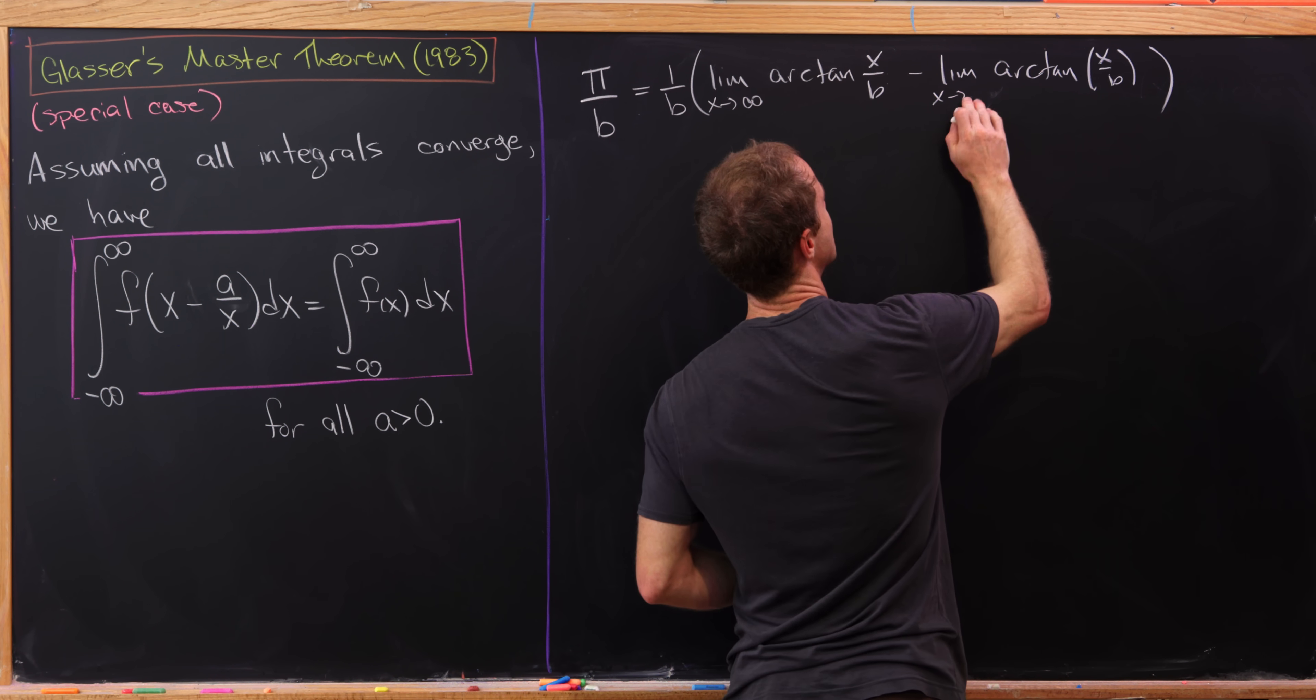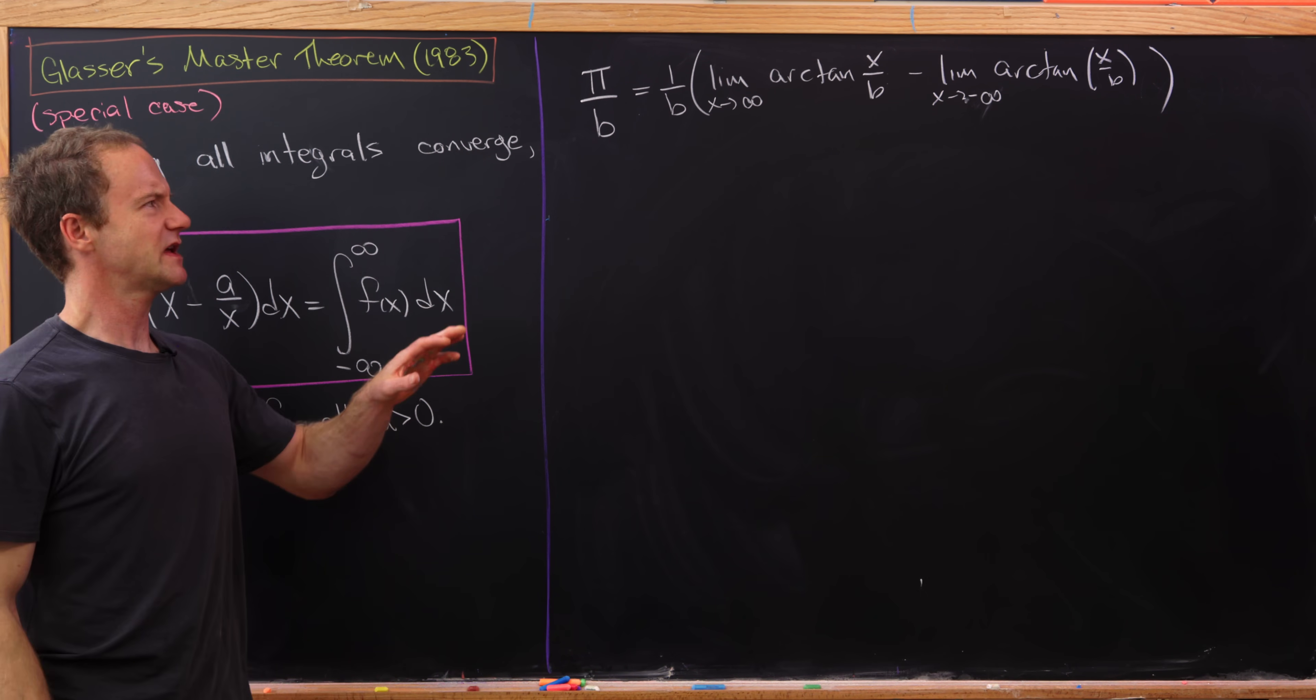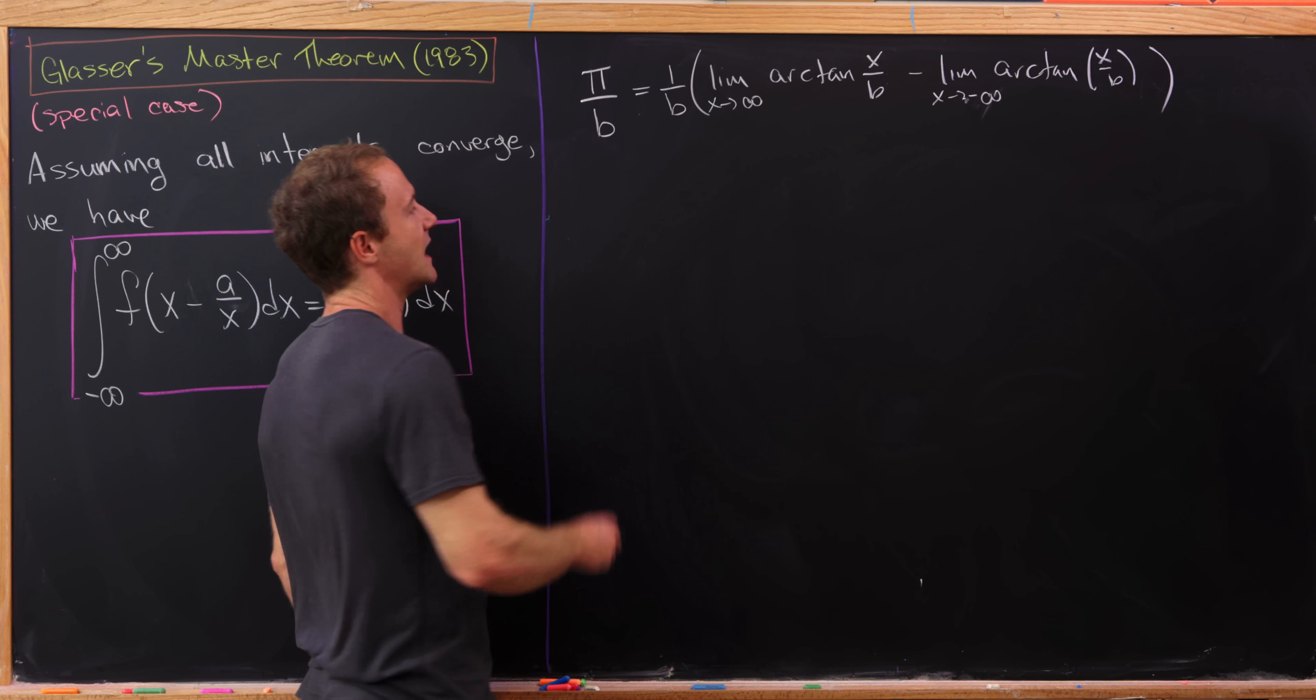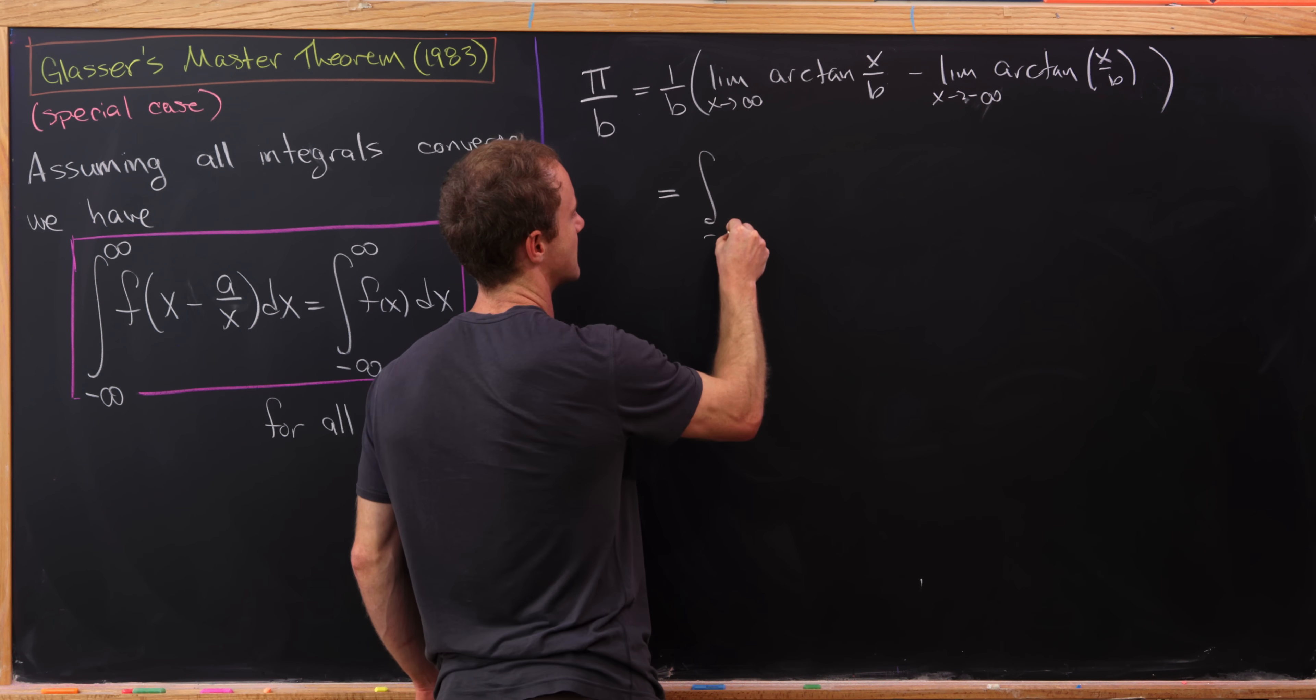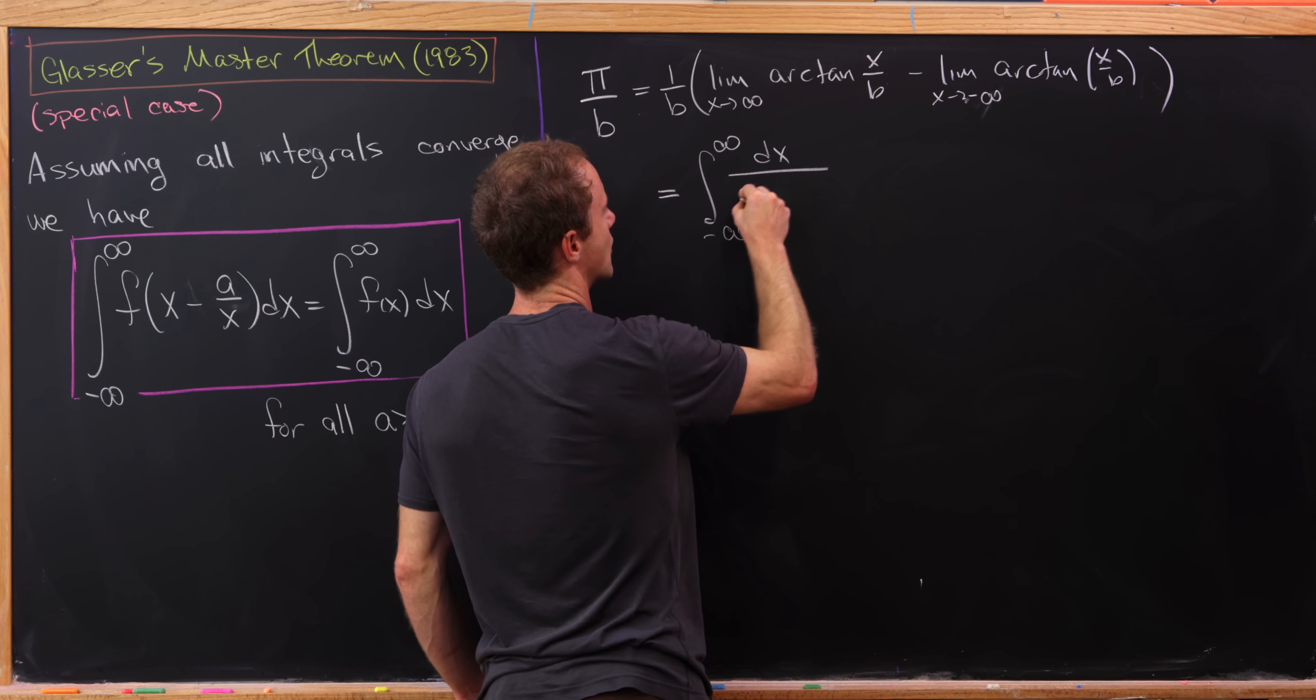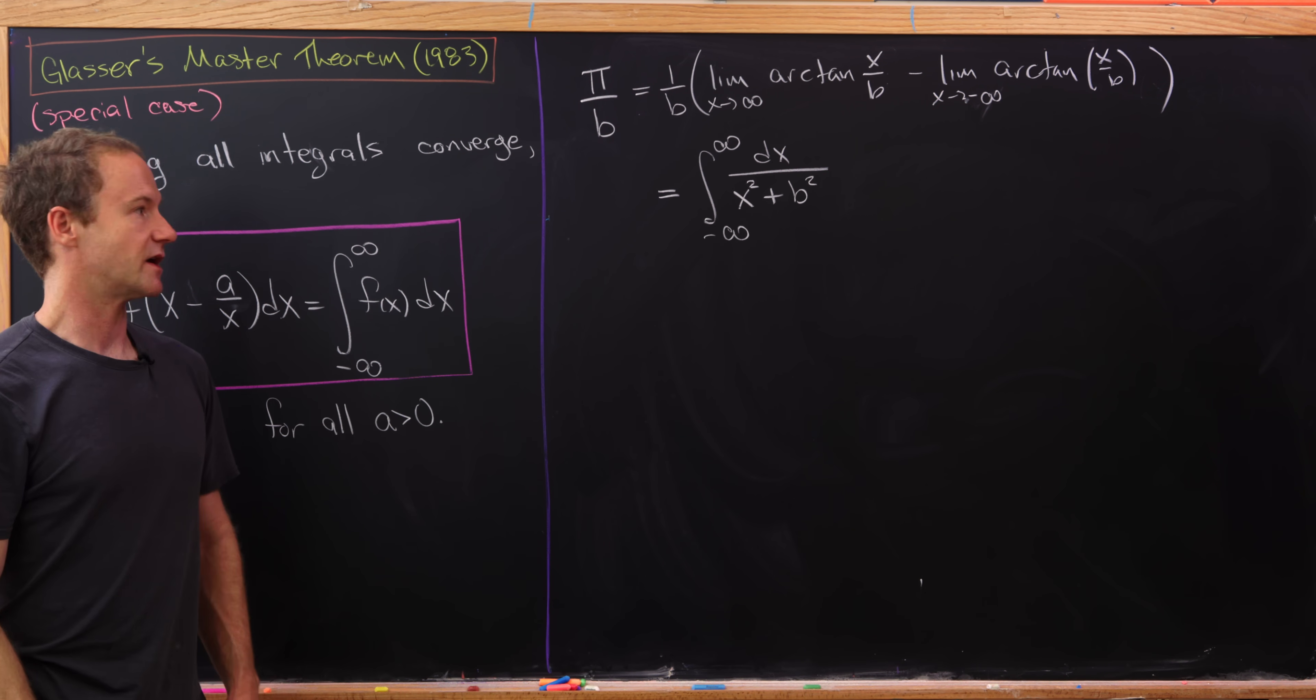But now we can take the derivative there and wrap that up into an integral. And after some simplification, this will give us the integral from minus infinity to infinity of dx over x squared plus b squared.